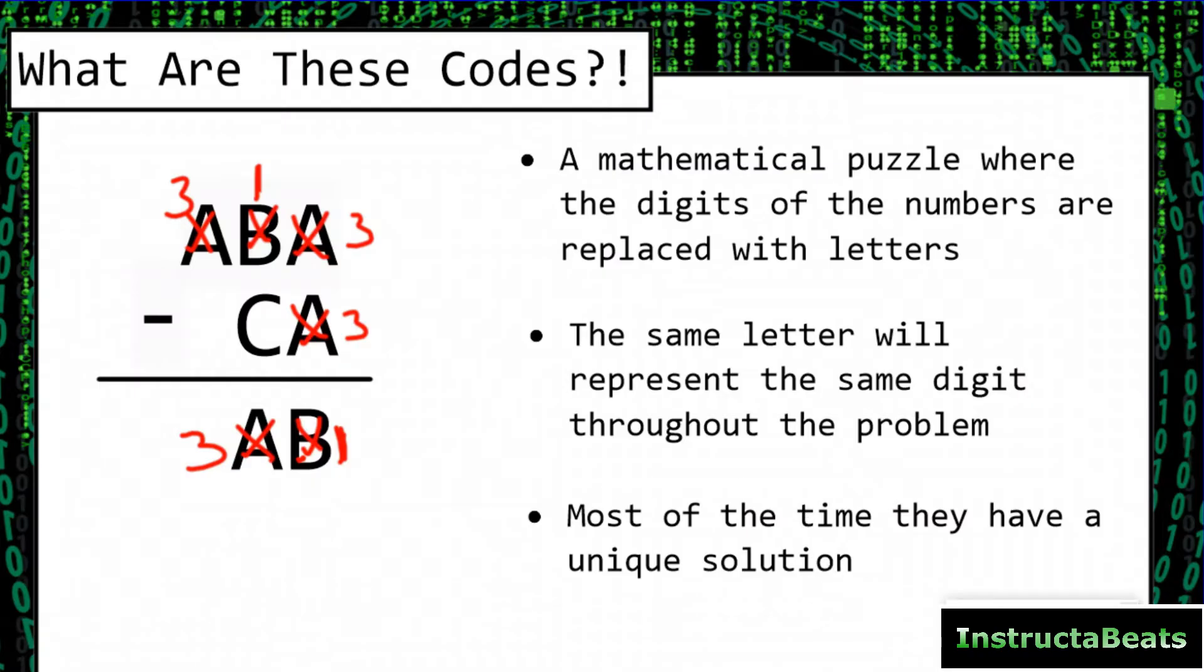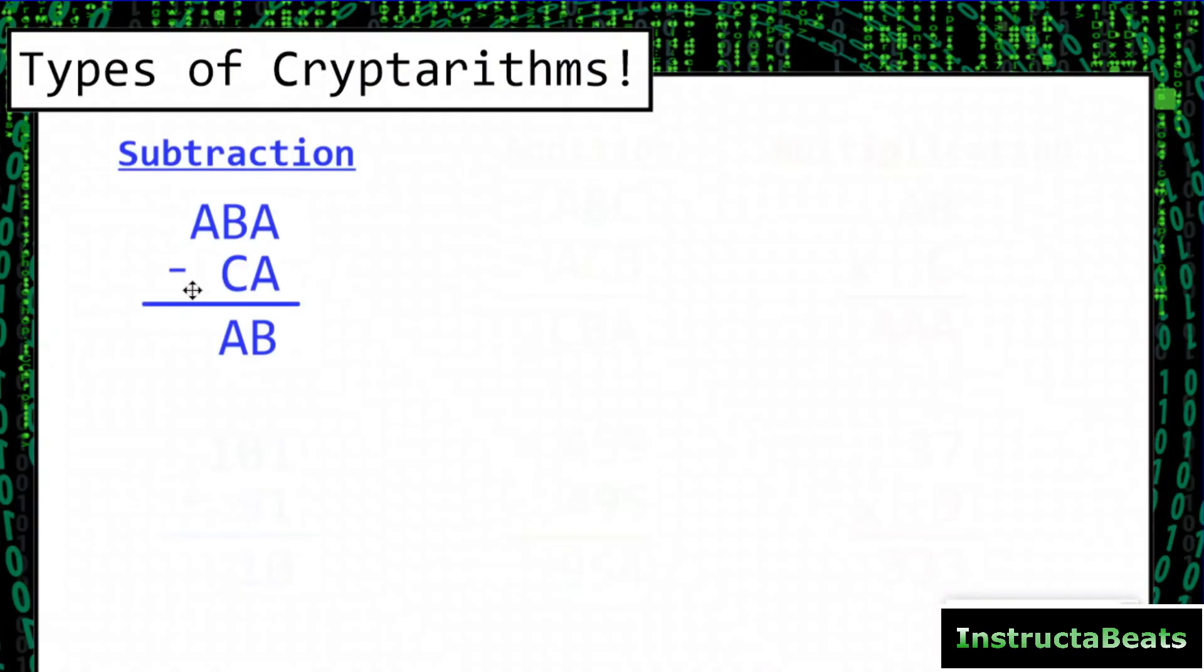Let's take a look at the different types of cryptorhythms that you might have seen or might be trying to work on right now. You just saw subtraction, and actually if you replaced this, really the digits for this, the only digits that work, would be 101 minus 91 equals 10. So A was 1, B was 0, C was 9.